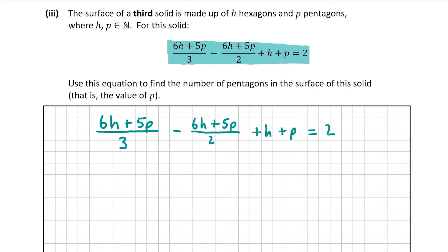When you have one fraction you just multiply by the denominator — the number on the bottom. But when you have two fractions, you want the lowest common denominator of both and multiply everything by that. The lowest common denominator is the smallest number that both 3 and 2 go into.